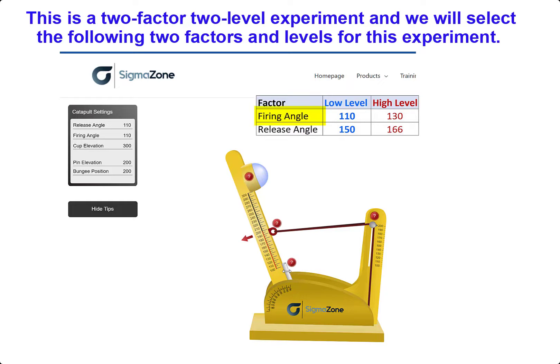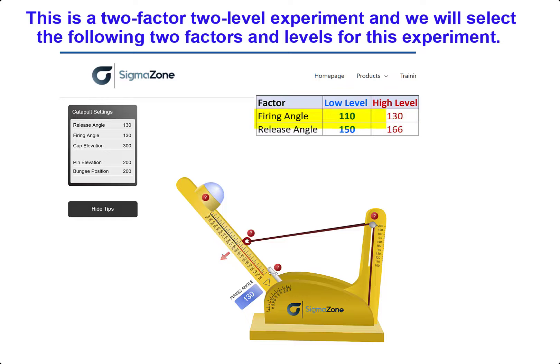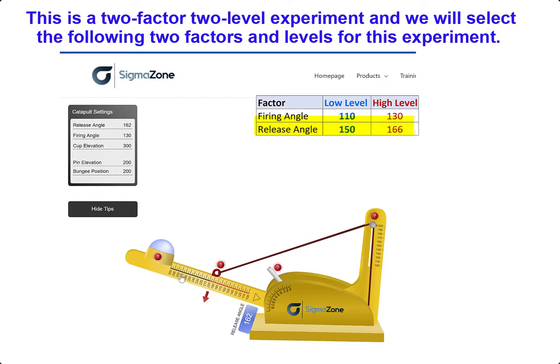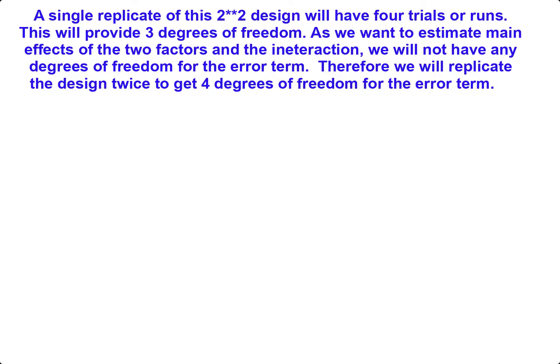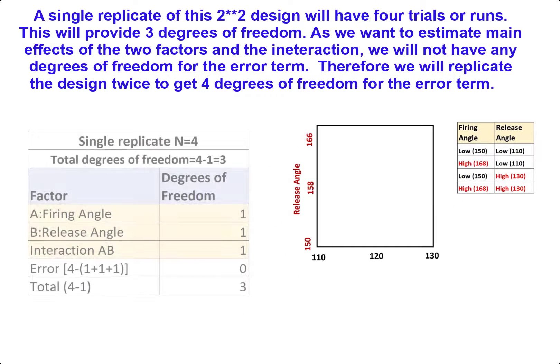First factor is firing angle for which the low level is 110 and the high level is 130. The second factor is release angle which we will select low level as 150 and a high level as 166. A single replicate of this 2 to the power 2 design will have four trials or four runs.